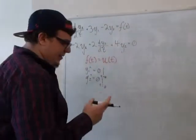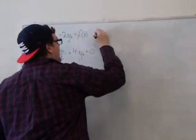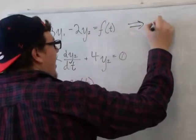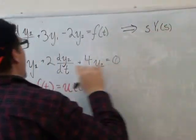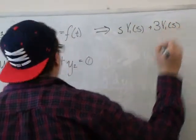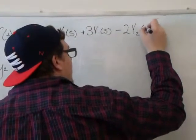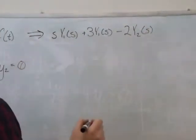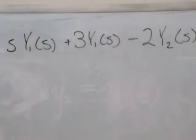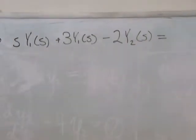So let's begin by taking the Laplace transform of these two equations up here. We take the Laplace transform of this equation and we get dy1/dt, so that just becomes s times y1(s), 3y1 becomes 3y1(s), and we have minus 2y2, so that just becomes minus 2y2(s). Laplace transforms are linear operators, so that means that constant multipliers just carry through.